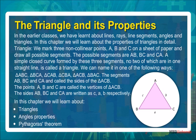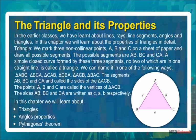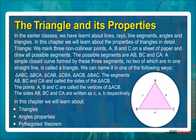We can name it in one of the following ways: Triangle ABC, Triangle BCA, Triangle CAB, Triangle CBA, Triangle ACB, Triangle BAC. The segments AB, BC and CA are called the sides of the triangle. The points A, B and C are called the vertices of the triangle.